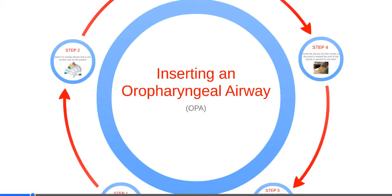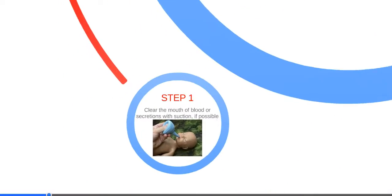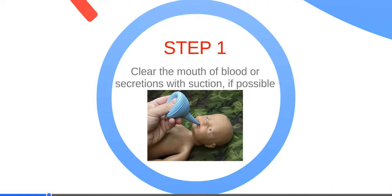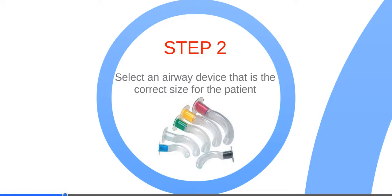Inserting an OPA is fairly simple with the right training. Step 1 is to clear the mouth of any blood or secretions with suction. Step 2 is to select a size-appropriate airway device.